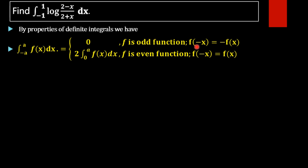A function is an odd function if we substitute minus x instead of x and we get the negative of that function. If we put minus x instead of x and we get the function itself, then that function is an even function.